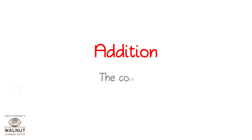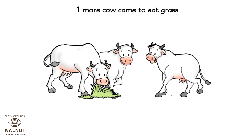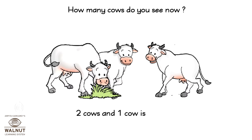Addition — the concept. Two cows were eating grass. One more cow came to eat grass. How many cows do you see now? Two cows and one cow is three cows.